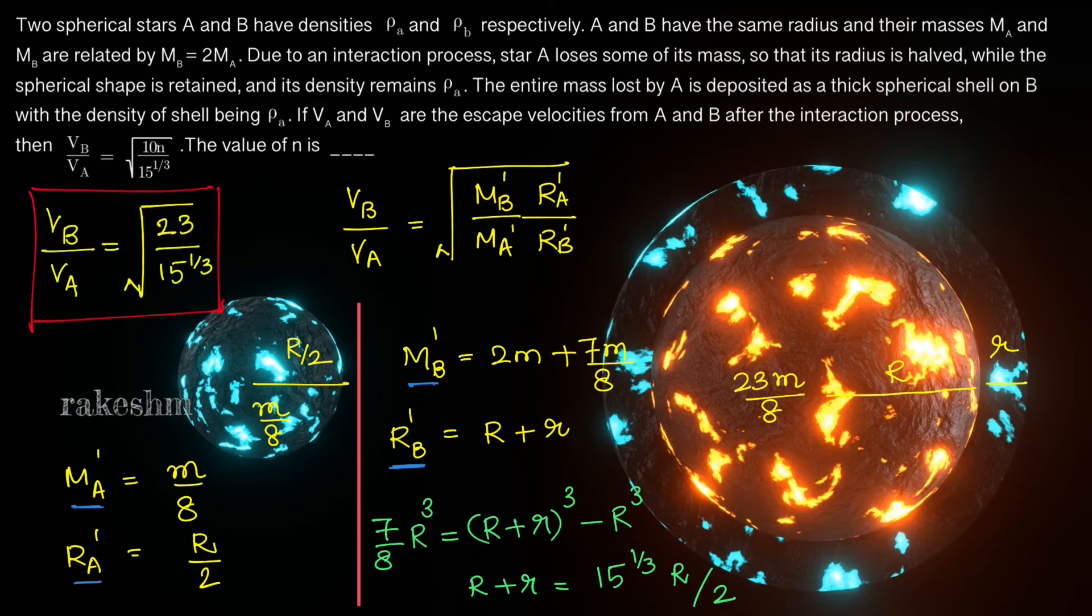Putting M_A, R_A and M_B, R_B in our original equation, we get V_B/V_A equal to √(23/15^(1/3)). Comparing this with the original equation, we get the value of n as 2.3.